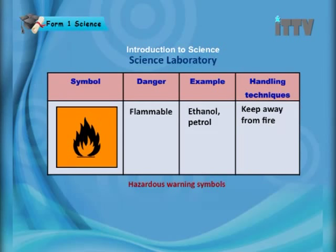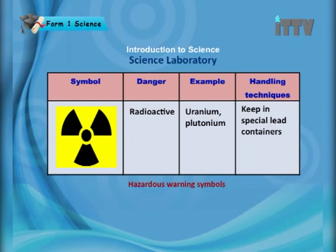Have you seen hazardous signs before? These signs appear on the labels of bottles to warn you. A flame symbol indicates that chemicals are flammable — examples include ethanol and petrol. Keep them away from fire. A fan-like symbol indicates radioactive material — examples include uranium and plutonium. These should be kept in special lead containers to prevent radioactive rays from escaping.